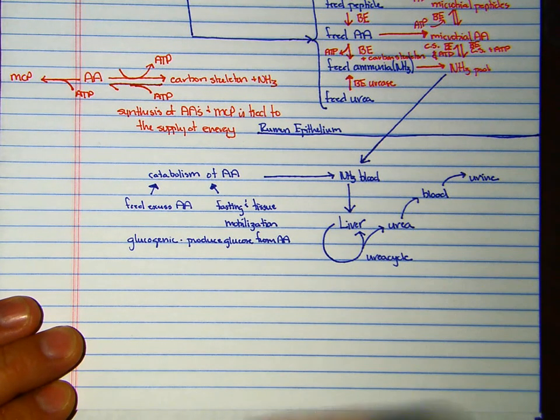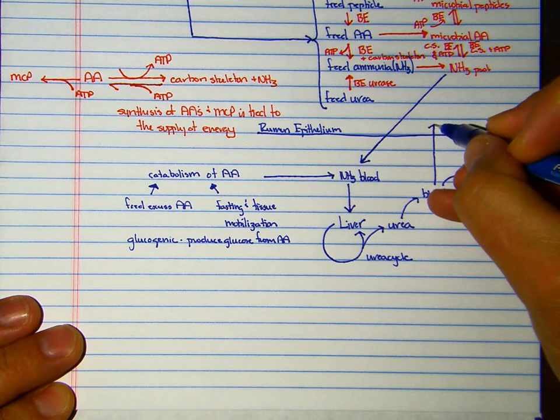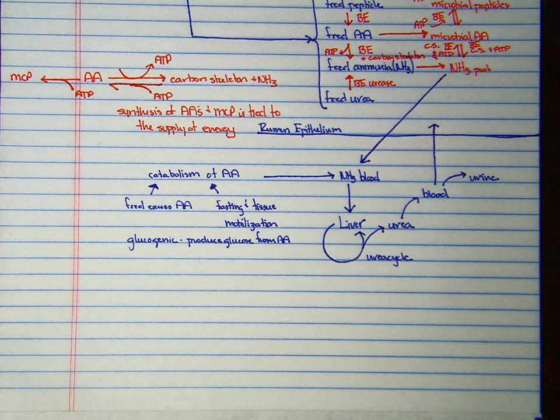That urea can either be excreted in the urine or recycled to the gastrointestinal tract. This recycling of urea to the gastrointestinal tract occurs in ruminants and non-ruminants, and it also occurs in the large intestine and small intestine. You have urea in your sweat as well.